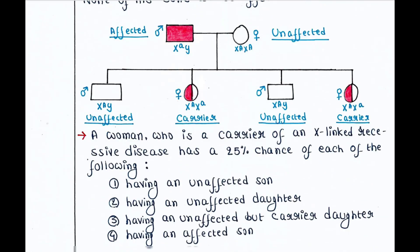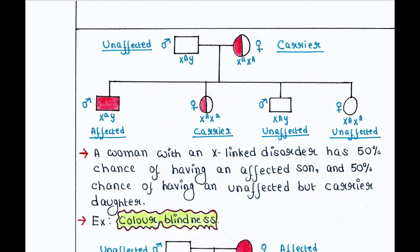In another case, the woman is a carrier — she has one mutated allele and one normal allele — while the father is unaffected with the normal capital A allele. They will have a 25% chance of an unaffected son, a 25% chance of an unaffected but carrier daughter, a 25% chance of an affected son, and a 25% chance of an unaffected daughter.